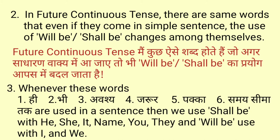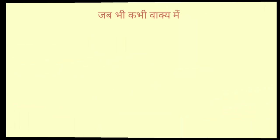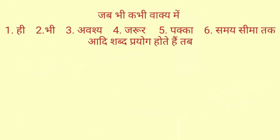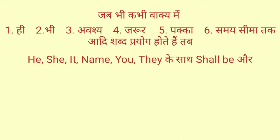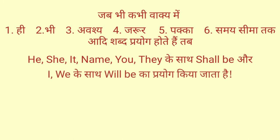Third point: Whenever words like 'he', 'be', 'avashya' (अवश्य), 'zaroor' (जरूर), 'pakka' (पक्का), or 'samay seema tak' (समय सीमा तक) are used in the sentence, then 'shall be' is used with 'he', 'she', 'it', name, 'you', 'they', and 'will be' is used with 'I' and 'we'.